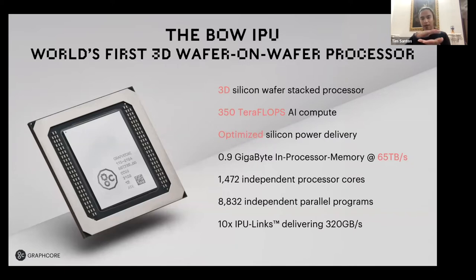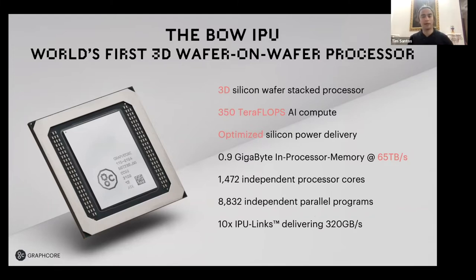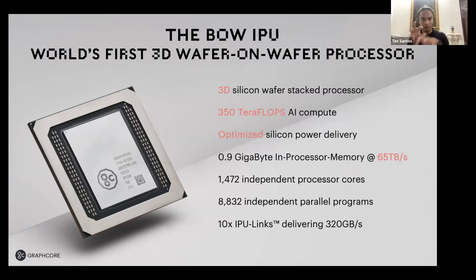Basically, from your cores you have another silicon layer on top, minimizing losses, making communication faster, making power delivery more efficient — hence faster clock speeds and better, more efficient performance. For example, you have 350 teraflops of AI compute in a single chip, 900 MB processor memory, and 1,472 processor cores that can be programmed at a very fine-grained level.